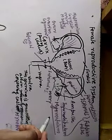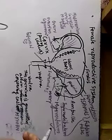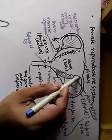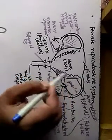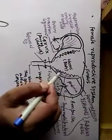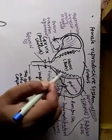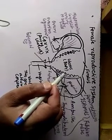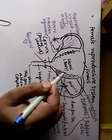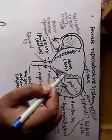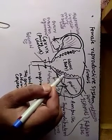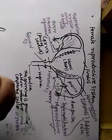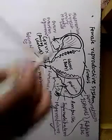The myometrium contains receptors for oxytocin and plays a significant role during parturition — helping the pregnant woman at the time of childbirth. The innermost layer of the uterus is called the endometrium. The endometrium is not smooth; it has many convolutions and ridges, and is richly supplied with blood vessels. Once implantation is done — when the blastocyst fits into the endometrium — placenta formation also takes place here. Further detail will be covered in upcoming videos.